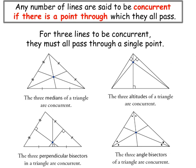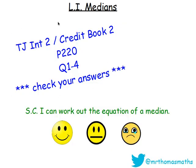A word you might come across is concurrent. Any number of lines are said to be concurrent if there is a point through which they all pass. The three medians of a triangle are concurrent — they all meet at the centroid. The same is true of altitudes, perpendicular bisectors, and angle bisectors, which we'll cover later.